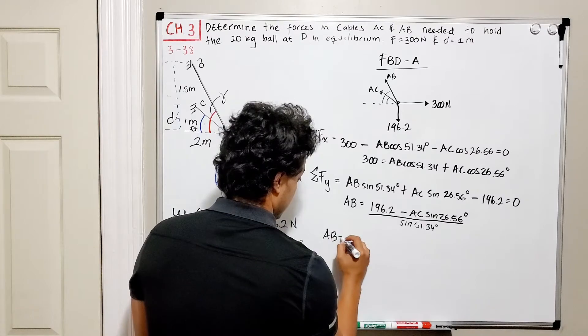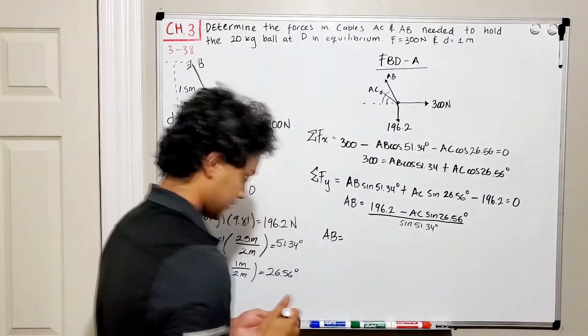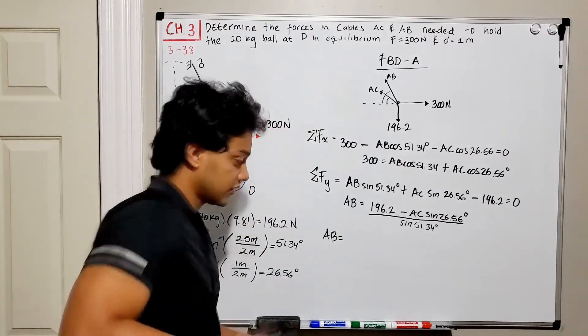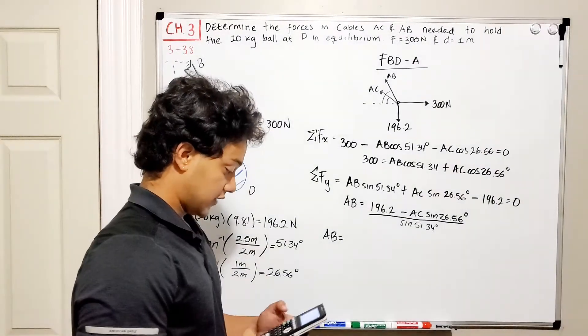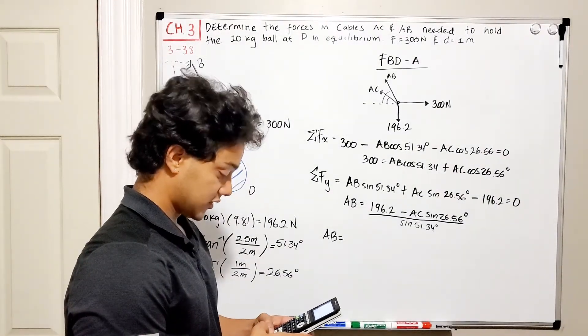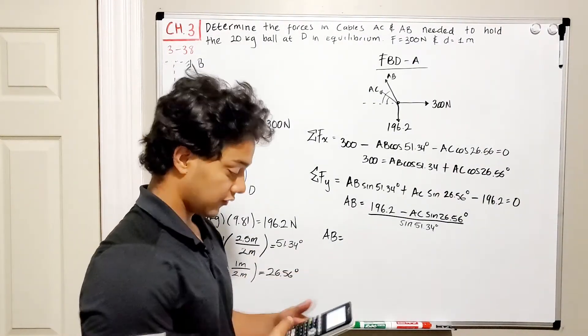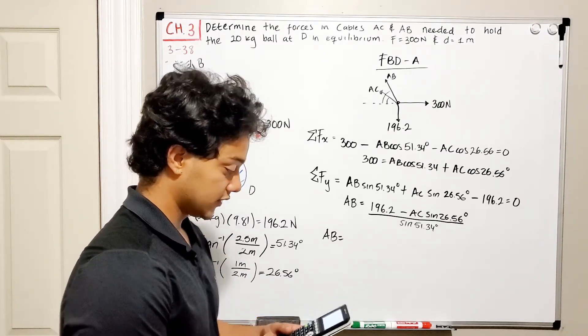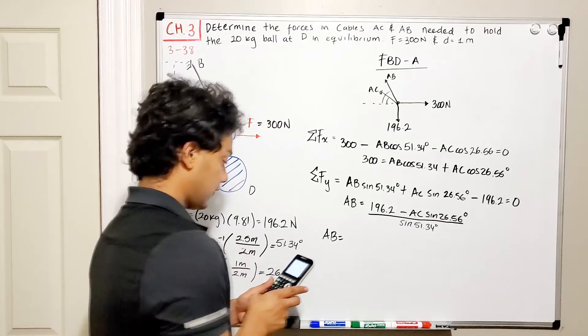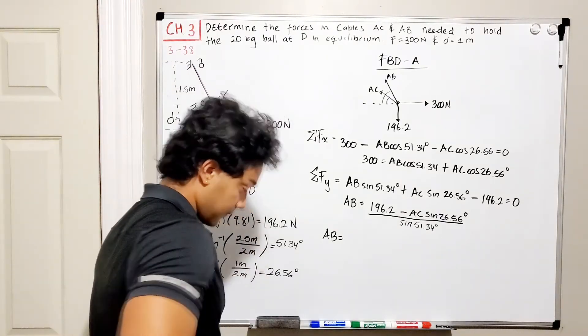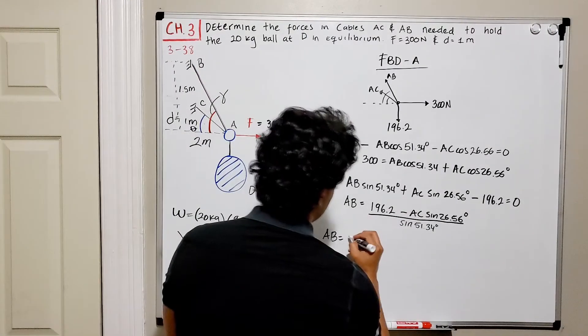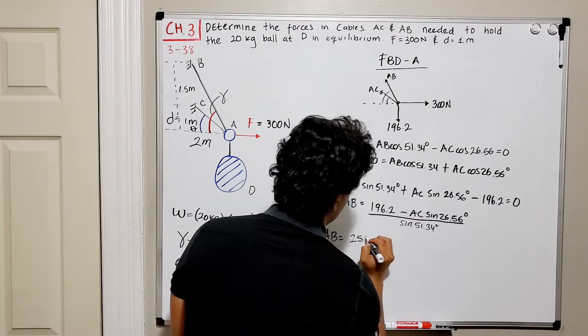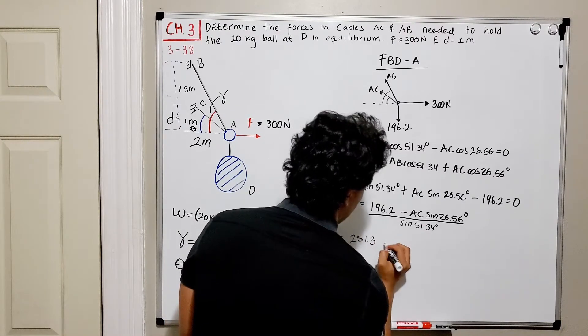So let's make these guys into numbers. I don't like to work with fractions. So 196.2 divided by the sine of 51.34 is equal to 251.3. So this is equal to 251.3 minus